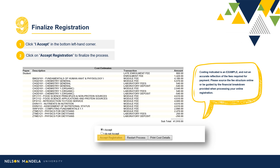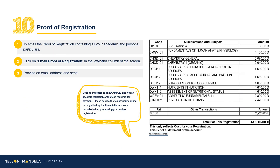Step 9: Finalize Registration. On screen, you will find a financial breakdown of the modules selected and confirmed for your first year. A subtotal of the year's academic costing is also indicated. Proceed to read the disclaimer, select I Accept, and click Accept Registration. A proof of registration document is generated, which we advise you email to an address of your choice. Navigate to the left-hand drop-down menu on screen, scroll to Email Proof of Registration, insert an address of your choice, and click Send.